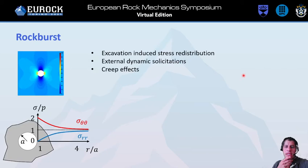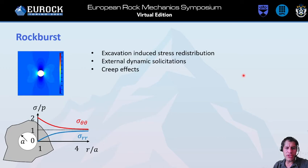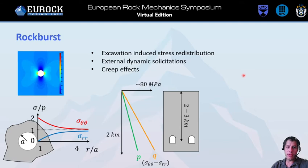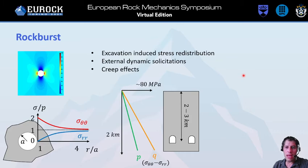What causes rock burst? Elastic theory can provide information about stress redistribution, and we know that deviatoric stresses increase on the wall face because of an excavation. In particular, at 2 km depth we could get to 80 MPa of deviatoric stress on the wall face. There are other effects like dynamic solicitations, external dynamic solicitations, and creep effects.